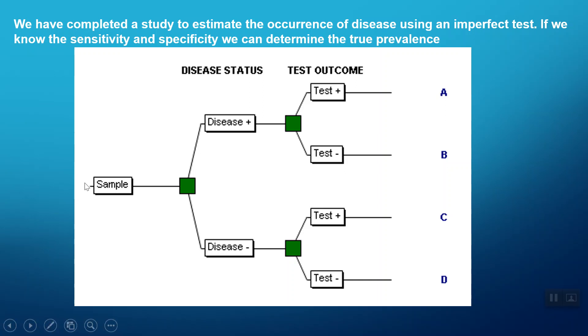If we remind ourselves what these event trees are doing, we take a randomly selected individual. It either has disease or it doesn't have disease. It will either test positive or test negative, and that's the same regardless of whether it has the disease or does not have the disease.